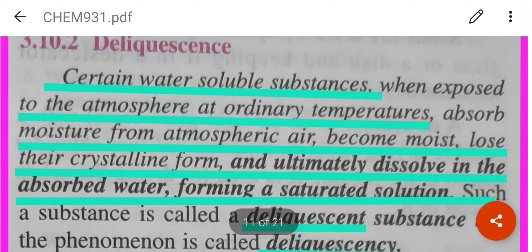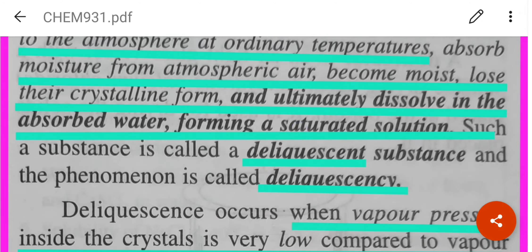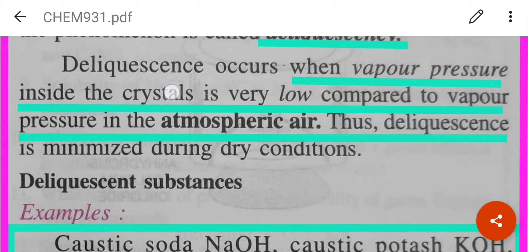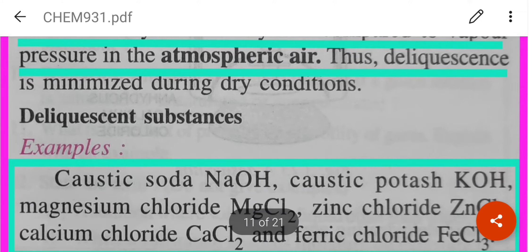Deliquescence: certain water-soluble substances, when exposed to the atmosphere at ordinary temperature, absorb moisture from the atmospheric air, become moist, lose their crystalline form, and ultimately dissolve in the absorbed water, forming a saturated solution. Such a substance is called a deliquescent substance and the phenomenon is called deliquescence. It occurs when the vapor pressure inside the crystals is very low compared to the vapor pressure in the atmospheric air, and it is minimized during dry conditions.